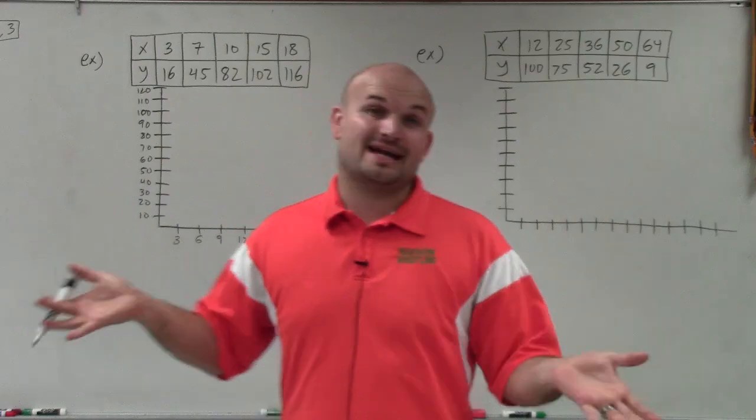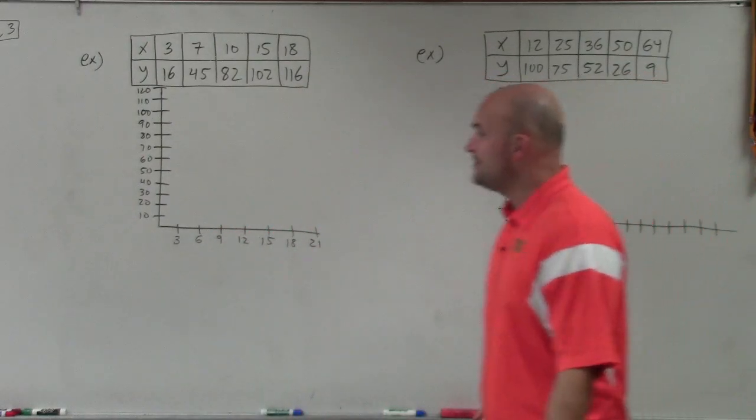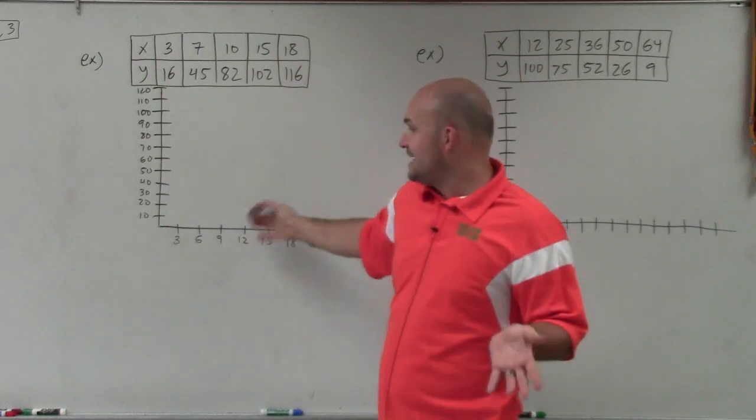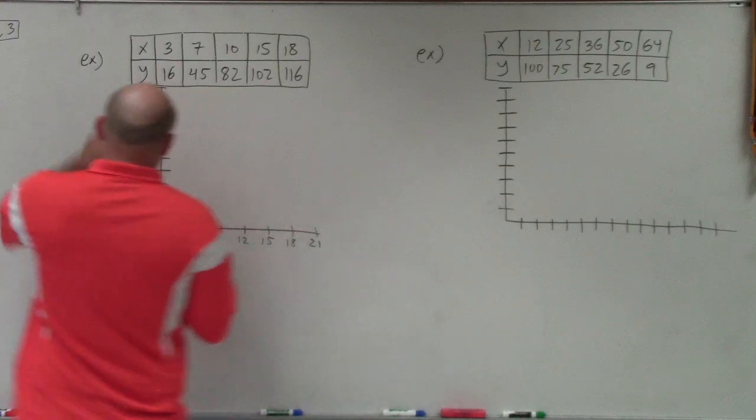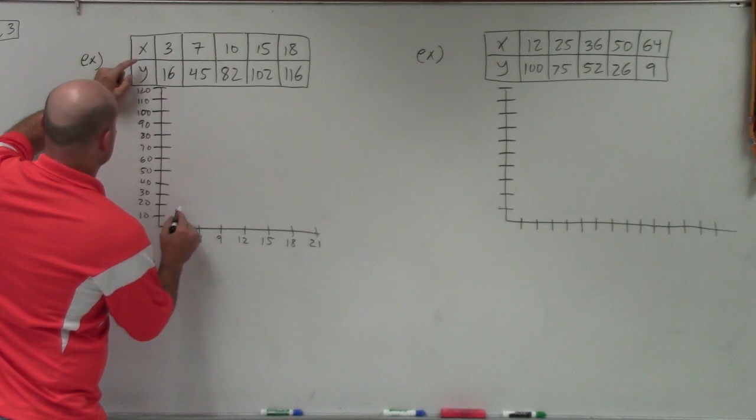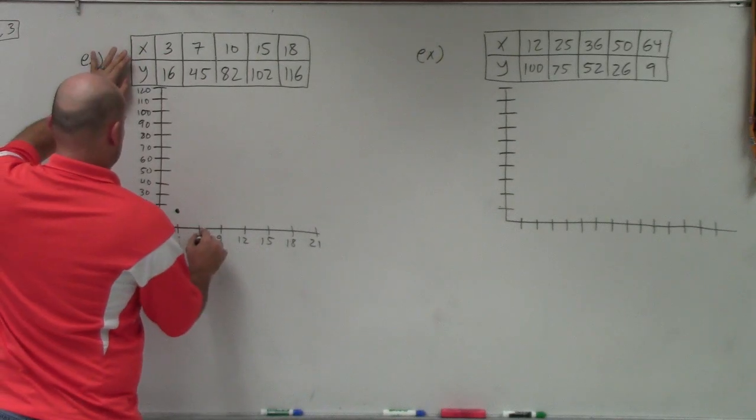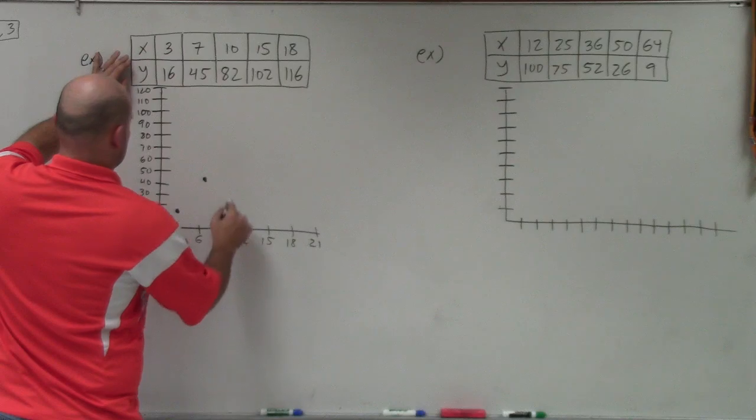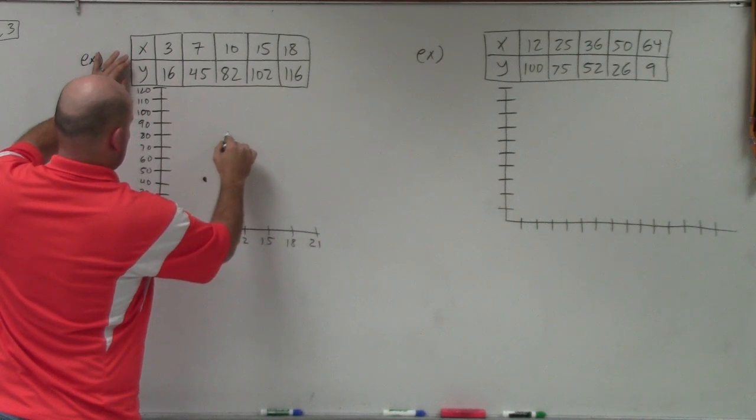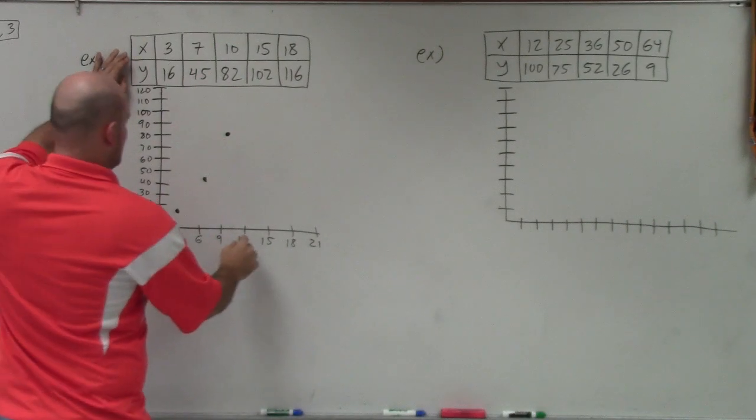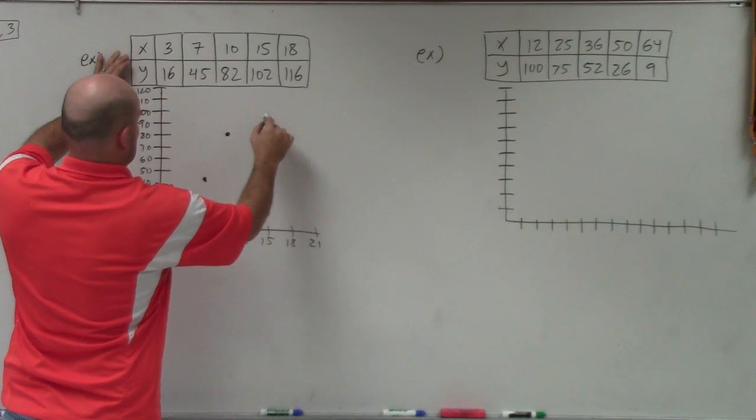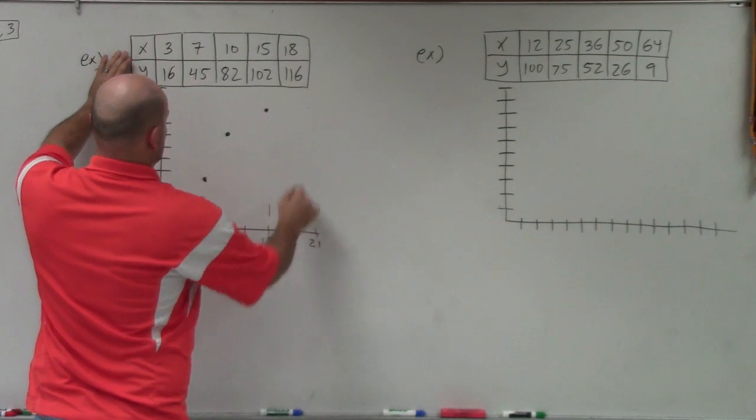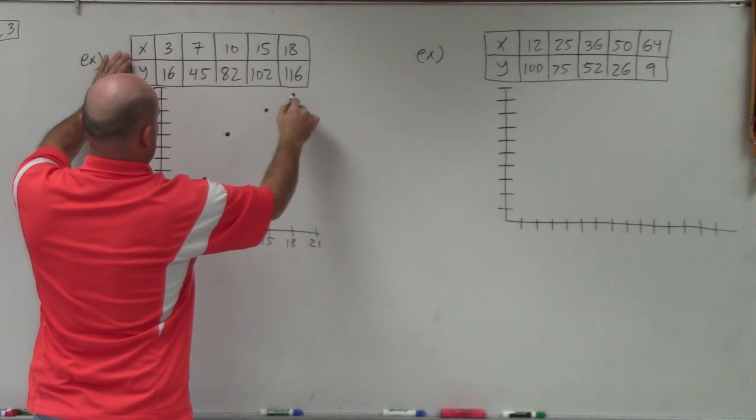Obviously, if I had grid paper, this would make this a lot easier. But I'm going to try to do my best without some grid paper. So now I'm basically just going to sketch the points as best I can. These values aren't exactly on my grid lines anyway. So I'm just going to kind of sketch them the best I can. 3, 16 is probably going to be somewhere right around there. Then I have 7, 45. So I'd go probably 7, 45. 10, 80, or 10 would be 82. And then 15, 102. And then 18, 116.